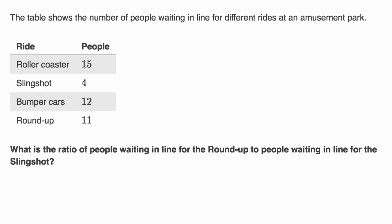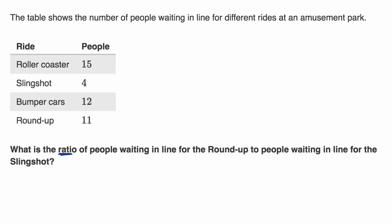Let's do some example questions dealing with ratios. The table shows the number of people waiting in line for different rides at an amusement park. 15 people are waiting in line for the roller coaster, four people for the slingshot, 12 people waiting in line for the bumper cars, and 11 people in line for the roundup. What is the ratio of people waiting in line for the roundup to the people waiting in line for the slingshot?